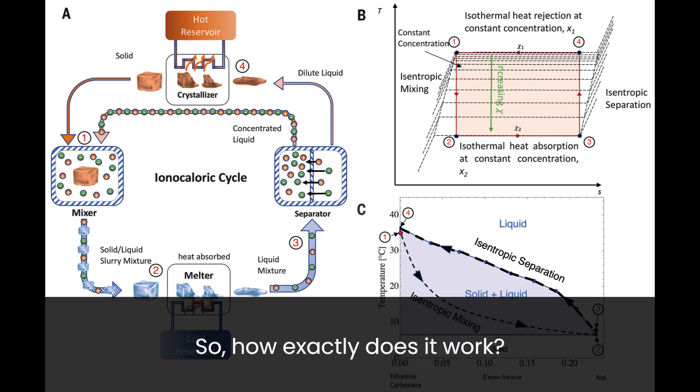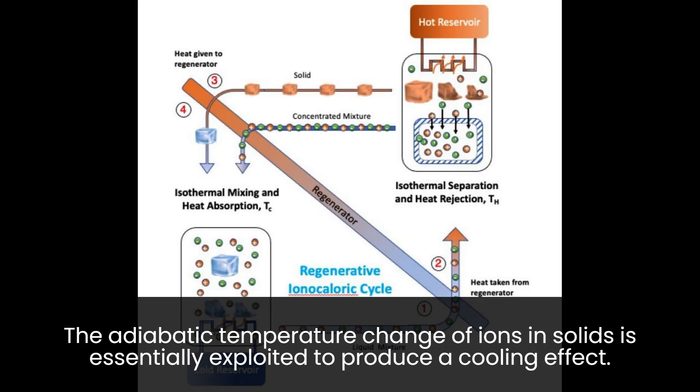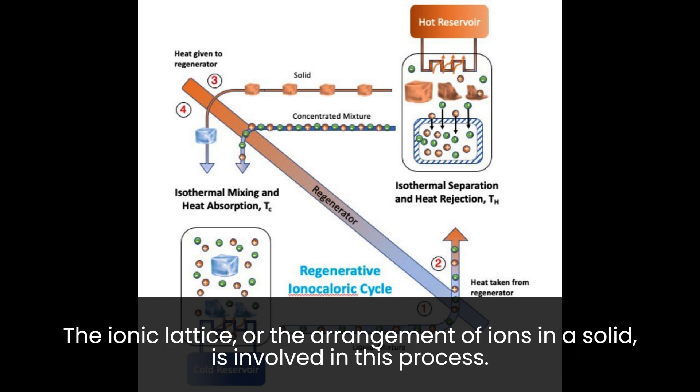So, how exactly does it work? The adiabatic temperature change of ions in solids is essentially exploited to produce a cooling effect. The ionic lattice, or the arrangement of ions in a solid, is involved in this process.